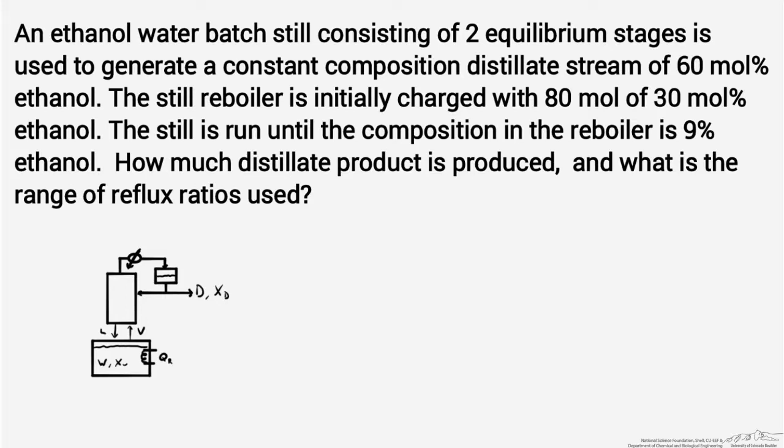The basic mode of operation in this batch still is to use the reflux ratio to adjust and compensate for the amount of separation we're getting out of the column in this vapor-liquid equilibrium process. As the batch still runs and we start to deplete the amount of ethanol in the total system, we can increase the reflux ratio to still achieve the desired separation and deliver the target distillate concentration.